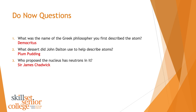The name of the Greek philosopher who first described the atom was Democritus, and that was in 400 BC — over 2,000 years ago. What dessert did John Dalton use to help describe atoms? He used the plum pudding model, where he thought an atom was a big mass of positive energy with little electrons — negatively charged particles — like the plums in a plum pudding. And number three, who proposed the nucleus has neutrons in it? That was Sir James Chadwick.